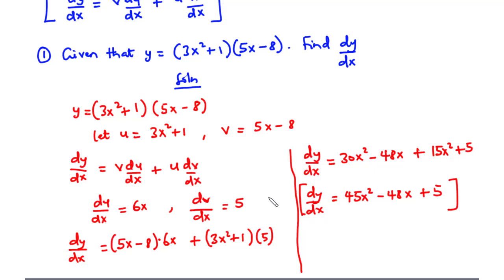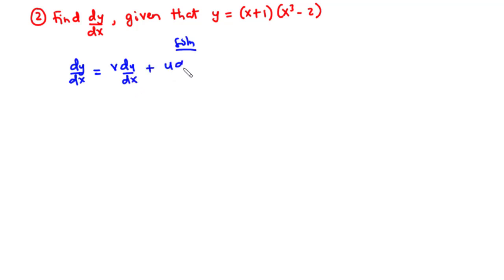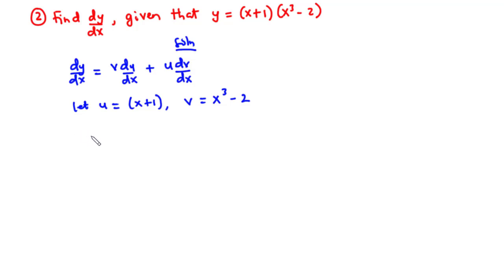This is how to use the product rule to find the derivative of a function. Now let's solve more examples. For the second question, y equals (x + 1)(x³ - 2), and we are supposed to find dy/dx. From the product rule, dy/dx equals v times du/dx plus u times dv/dx. Let u equal x + 1 and let v equal x³ - 2.